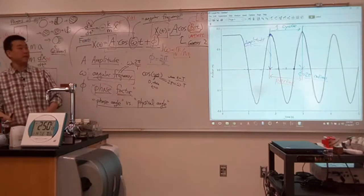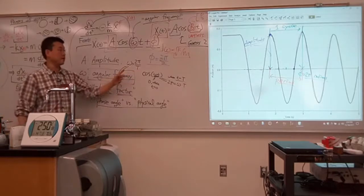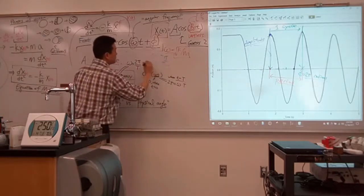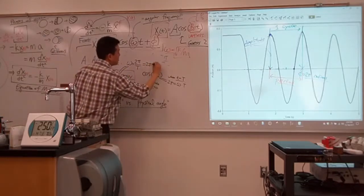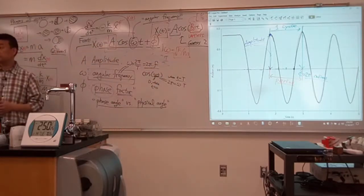That's one way of expressing it. Or if you take one over period, then you recognize that's the frequency. Then angular frequency is equal to 2 pi times the frequency. Like different ways of expressing it.